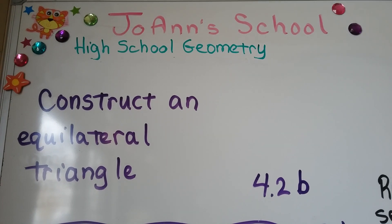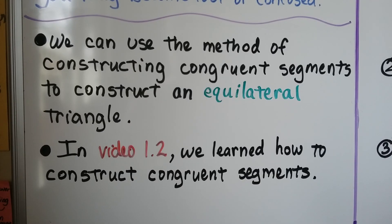Construct an equilateral triangle. We're going to use a compass and a straight edge. We can use the method of constructing congruent segments to construct an equilateral triangle. In video 1.2, back in chapter 1, we learned how to construct congruent segments. So let's do a real quick review of that.